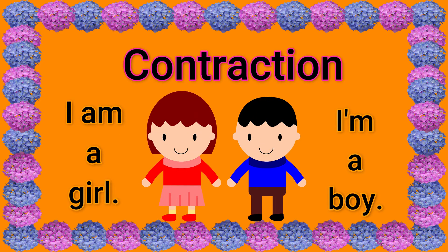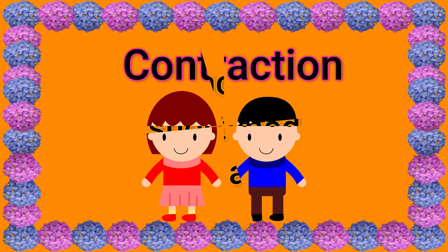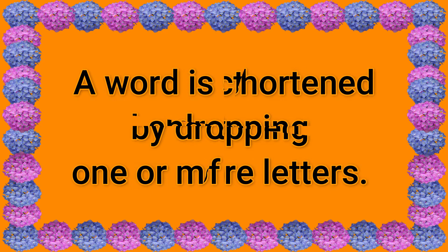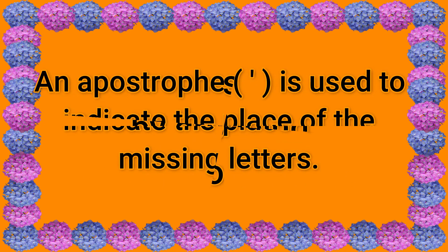Hello children, welcome to you all. In this video we are going to see contractions. A contraction is a shortened form of a word. A word is shortened by dropping one or more letters. An apostrophe is used to indicate the place of the missing letters. Let us see this with an example.